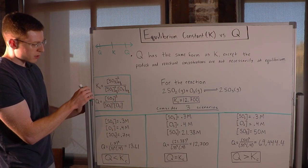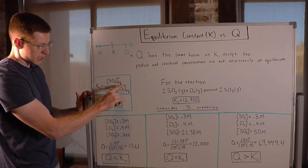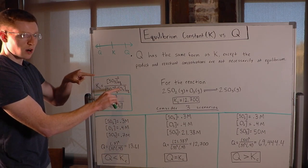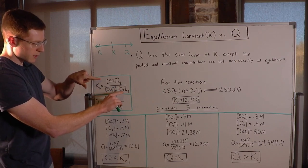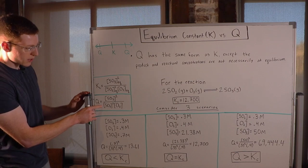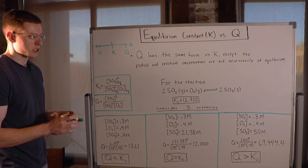But notice that Kc has a subscript EQ next to each term. That means that these concentrations are necessarily at equilibrium. Notice that subscript does not appear in the Q. That's because these concentrations are not necessarily equilibrium concentrations.